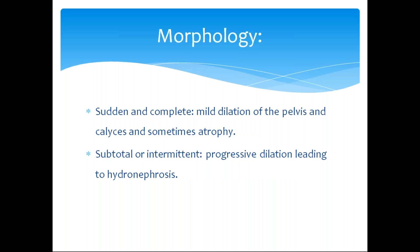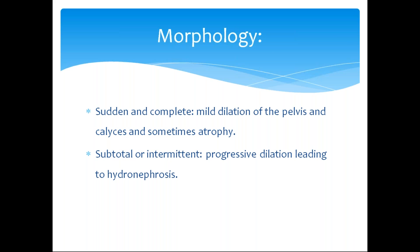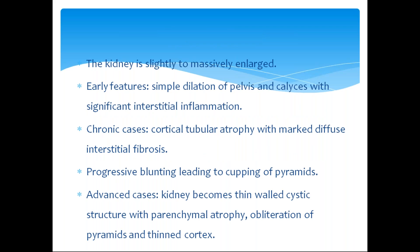Moving on to morphology, there are two mechanisms: subtotal and complete, and sudden and complete obstruction. Sudden and complete obstruction does not give time for the kidney to undergo atrophy or maximal dilation. In subtotal or intermittent obstruction, early changes include simple dilation of the pelvis and calyces with significant interstitial inflammation. In chronic cases there is cortical tubular atrophy with marked interstitial fibrosis.